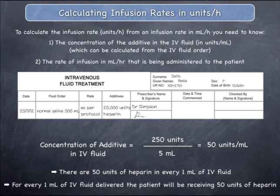Once you know this information, calculating the infusion rate in units per hour of heparin can be undertaken if you know the rate in mils per hour. Since there are 50 units of heparin in every one mil of IV fluid, you simply need to multiply the rate in mils per hour by 50 to get the rate in units per hour.